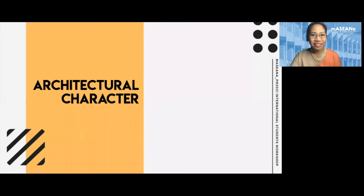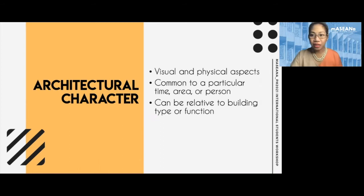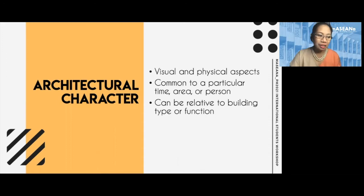What exactly is architectural character? It relates to visual and physical aspects that relate to our perception of built form. This can be common to a particular time — like how in the Middle Ages everything was Romanesque before it turned Gothic — or associated with a particular place, like how Spanish colonial houses in Vigan are of a particular style and don't look like houses of the same period in Manila. Character can also be specific to a person, such as an architect's body of work or a specific patron.